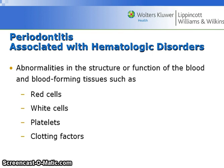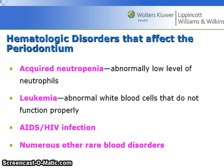Those associated with hematologic disorders show abnormalities in the structure or function of the blood and blood-forming tissues, such as red cells, white cells, platelets, or clotting factors. The disorders that affect the periodontium are acquired neutropenia, which shows an abnormally low level of neutrophils; leukemia, which exhibits abnormal white blood cells that do not function properly; AIDS or HIV infection; and numerous other rare blood disorders.